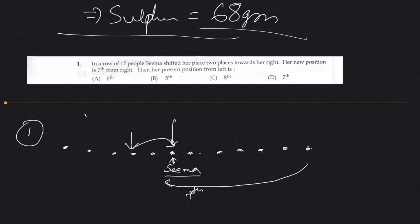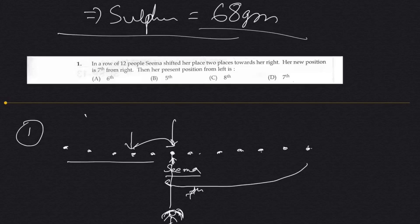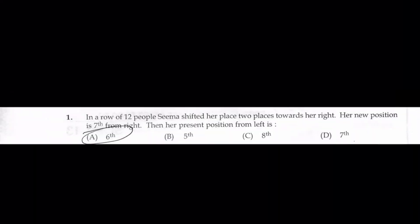Then her present position from the left — she is here. Counting from the left: 1, 2, 3, 4, 5, 6. So her position from the left is 6th, which is option number A.